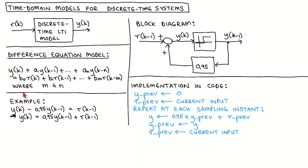To make this concrete, let's look at a simple example. In this example we have a first order system. A1 is equal to minus 0.95, B0 is 0 and B1 is equal to 1. We can easily rearrange the terms such that the current output is the only term on the left hand side. The current output is therefore described in terms of the previous outputs as well as the current and previous inputs. And if we know the initial conditions of the system, we can calculate the output of the system in response to any input by calculating this equation at each time step.